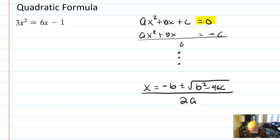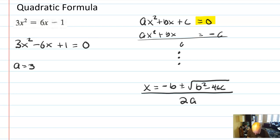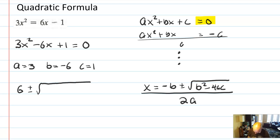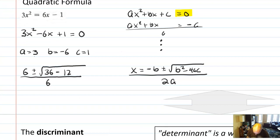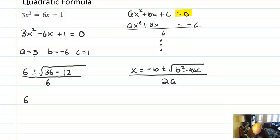One important thing about the quadratic formula: the equation must equal zero first. So to use the quadratic formula on this equation, I need to rewrite it in proper form. I can identify that A = 3, B = −6, and C = 1. The quadratic formula gives: x = (6 ± √(36 − 4·3·1)) / (2·3) = (6 ± √(36 − 12)) / 6 = (6 ± √24) / 6.